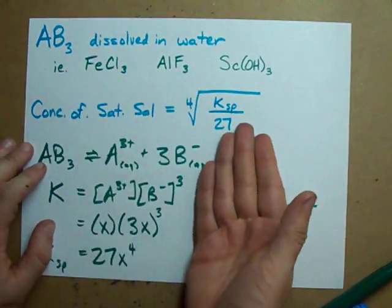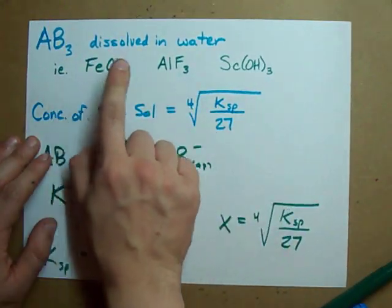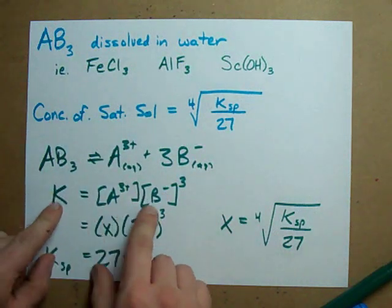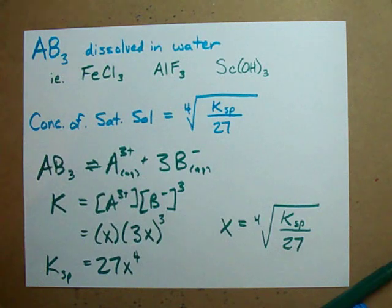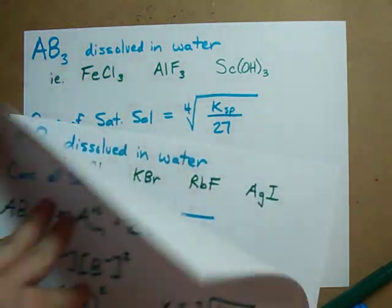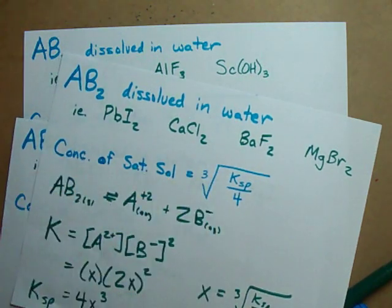All of these expressions just come from the fact that KSP is a regular equilibrium where you're solving for X. Best of luck in your own saturation concentration calculations. Cheers.